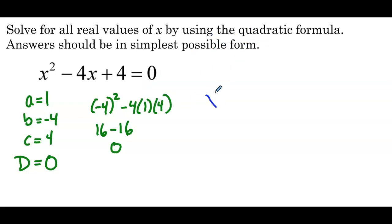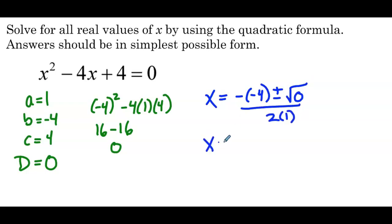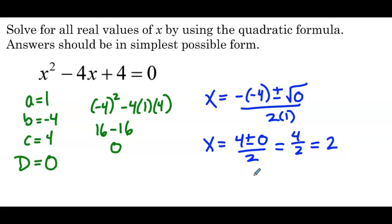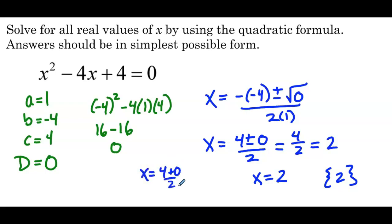So x equals the negation of negative 4, plus or minus the square root of 0, over 2 times 1. That means we have positive 4 plus or minus 0 over 2. Well, 4 plus 0 and 4 minus 0 — this is the one case where they actually are the same thing. So we just get 4 over 2, which is 2. Our solution is x equals 2. Technically there are two answers — they both happen to be 2. So we only have to list it once, but this nicely emphasizes what happens when the discriminant is 0.